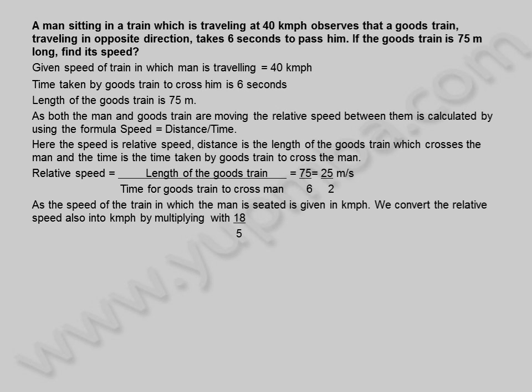As the speed of the train in which the man is seated is given in kilometers per hour, we convert the relative speed also into kilometers per hour by multiplying with 18 by 5. Relative speed is equal to 25 divided by 2 into 18 by 5, which is equal to 5 into 9, equal to 45 kilometers per hour.